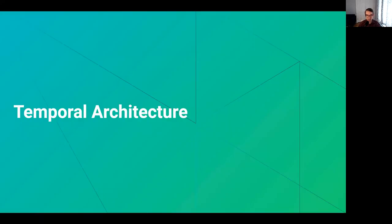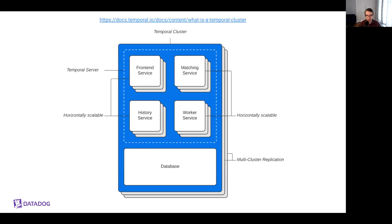Before we dive into how Temporalite may help solve some of these challenges — and spoiler, they're not going to be solved by the end of this talk — I'd like to go over the Temporal server architecture at a high level. A Temporal server consists of four independently scalable services: a front-end gateway for rate limiting, routing, and authorization; a history subsystem, which maintains data about running workflows; a matching subsystem, which hosts queues for dispatching tasks to workers; and a worker service that runs some internal background workflows. These Temporal services can run independently or be grouped together into a shared process, which allows you to run them on the same physical or virtual machine, and this is an option already present in upstream.